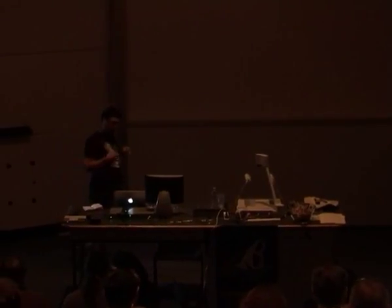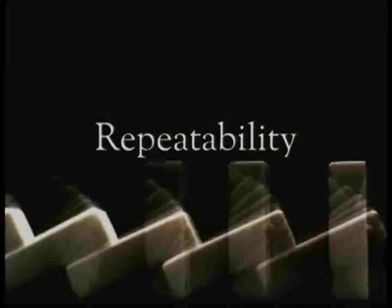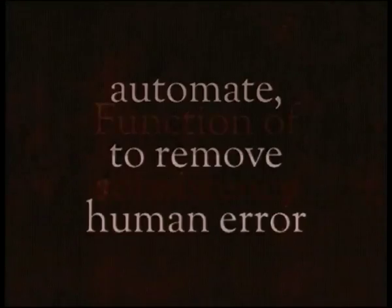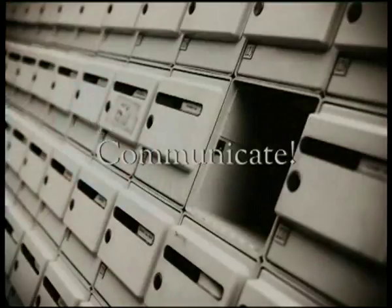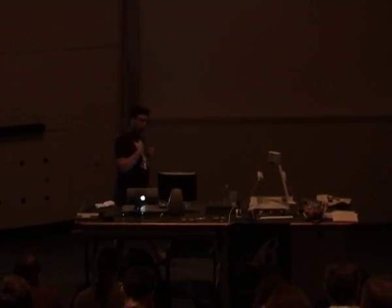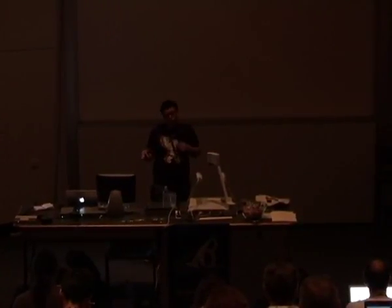Hopefully I've given you an overview of how you can implement DevOps at the technical level. To recap: consistency — ensuring identical behavior within or across environments. Repeatability — a function of consistency, automating to remove human error and shortening feedback loops. And visibility — one eye on the past, one eye on the future. But there's one key point I missed: communication. If we didn't have communication between all the different teams and weren't actively working on it, none of this would have worked. Thank you very much.